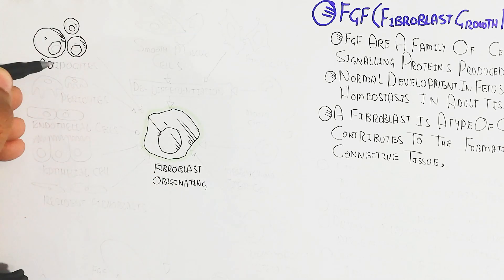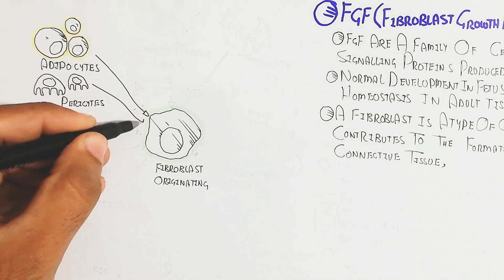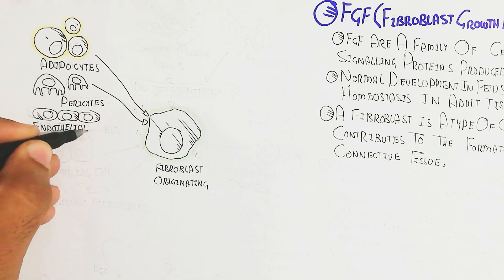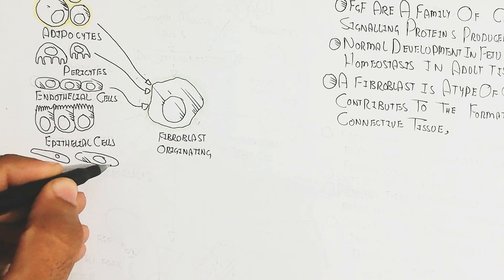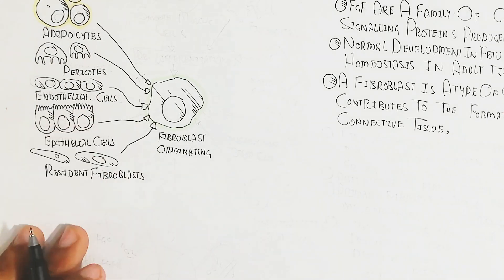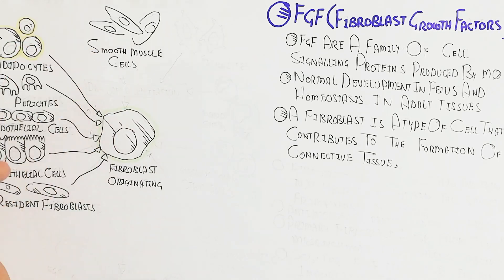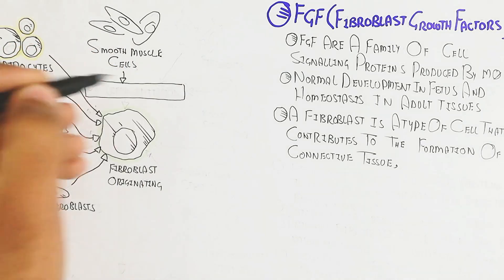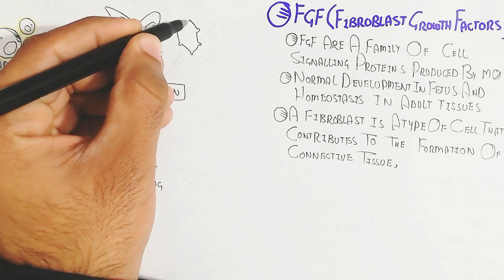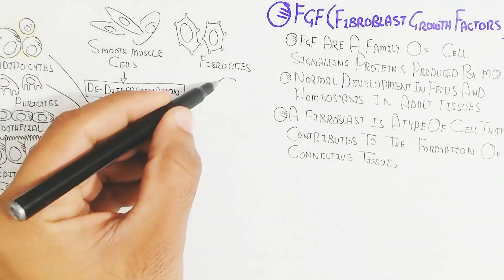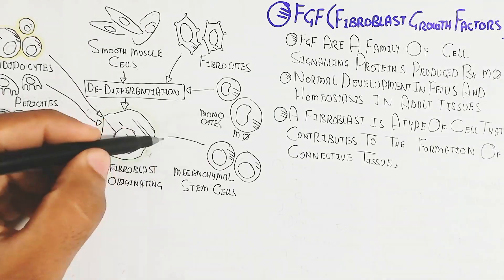Fibroblasts originate from several types of tissue, including adipocytes, pericytes, endothelial cells, epithelial cells, and resident fibroblasts. De novo differentiation also occurs through fibrocytes, smooth muscle cells, monocytes, and macrophages — meaning smooth muscle cells can convert into fibroblasts.